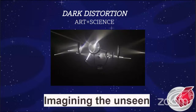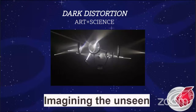Scientists have reason to believe a mysterious substance makes up about 27% of all matter-energy in the universe, yet they haven't seen it directly — only its gravitational pull on visible matter. Dark Distortion is an art installation at the Science Gallery Dublin that tackles the unseeable nature of dark matter by combining art and science, in collaboration with ESA. It is a sculpture of about 10 square feet designed to mimic the twisted motion of light as it passes through dark matter.